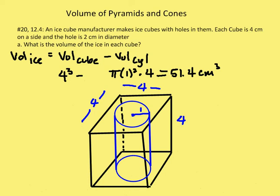Problem number 20 is a multiple component question; we'll tackle each of the four parts separately. We have an ice cube manufacturer that makes ice cubes with holes — a cylindrical hole in the middle of a 4 by 4 by 4 cube. The diameter of the cylinder is 2, so the radius is 1. The volume of the ice equals the volume of the cube minus the volume of the cylinder.